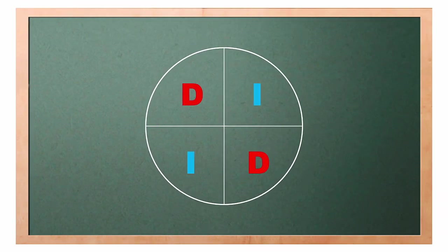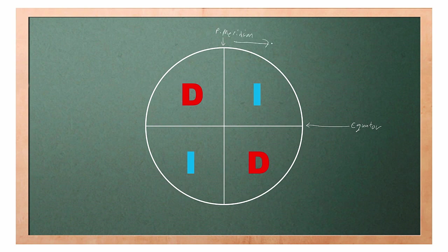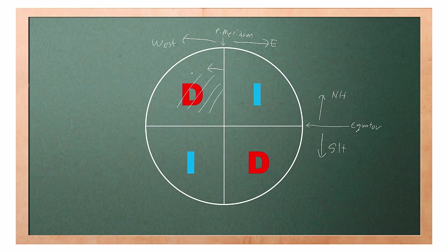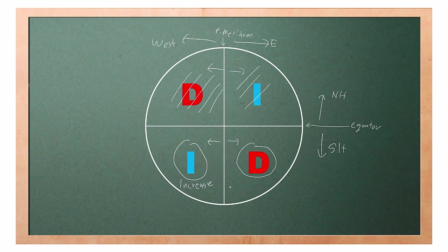From what we have learned, it can all be summarized into one simple diagram. This line represents the equator and this line represents the prime meridian. To the right of the prime meridian is east and to the left is west. Above the equator is the northern hemisphere and below is the southern hemisphere. If you travel west in the northern hemisphere, your track will decrease (D for decrease). If you travel east in the northern hemisphere, your track will increase (I for increase). If you travel west in the southern hemisphere, your track will increase. And if you travel east in the southern hemisphere, your track will decrease.